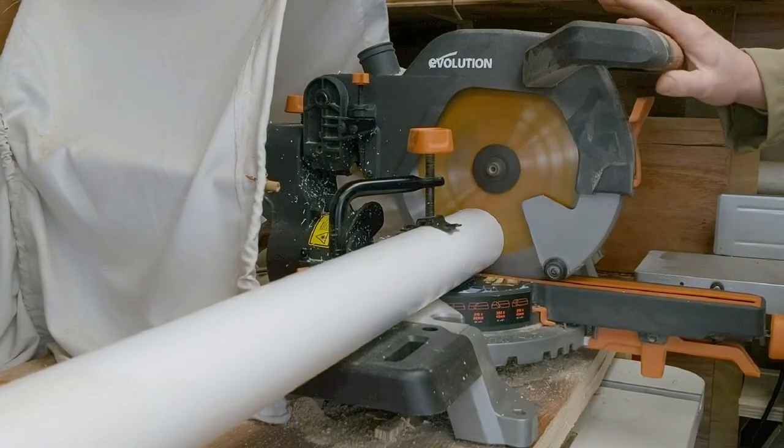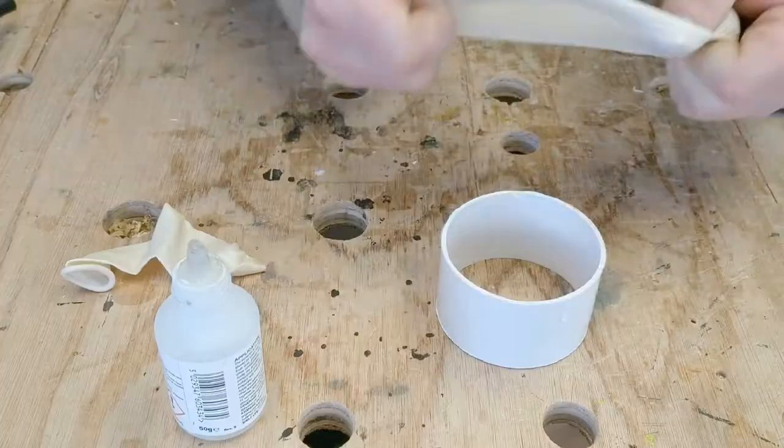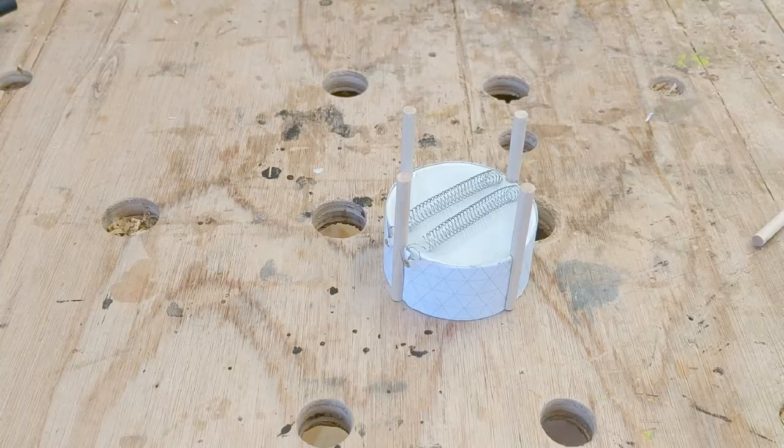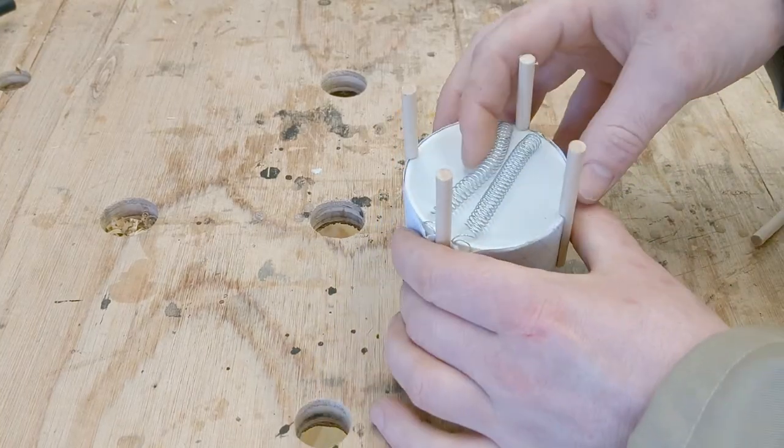Making drums is pretty straightforward. Cut some PVC pipe, glue a balloon to it. If you're feeling fancy add some springs that'll make a snare.